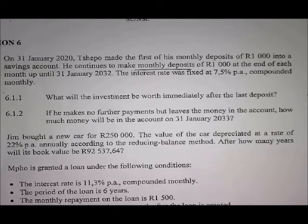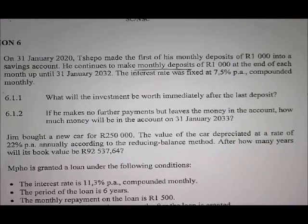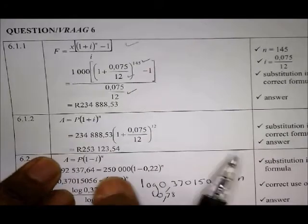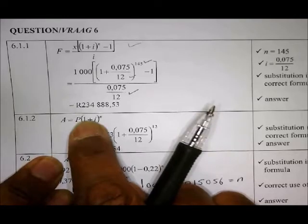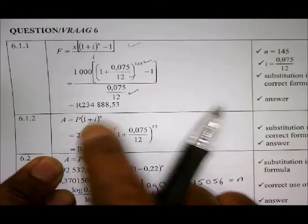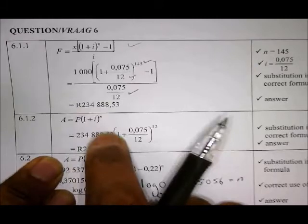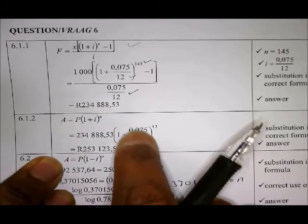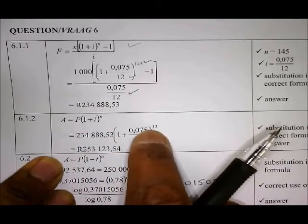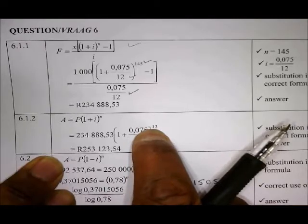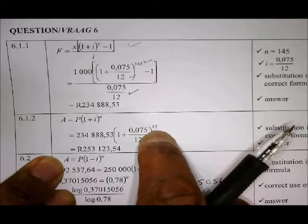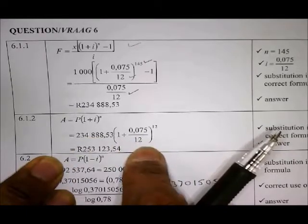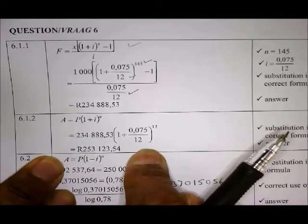So therefore, it is no more annuity problem, but a straightforward compound growth formula. Compound growth formula, because there's no monthly payments here. Putting the value you've got there, this still remains the same. Remember, it's just one year, people. So therefore, 12 months. Put this all in your calculator, and you will get your answer.